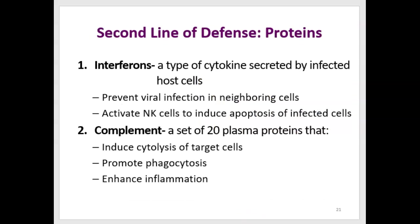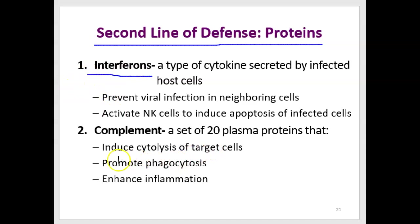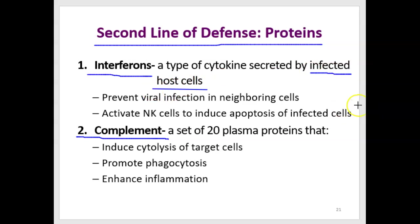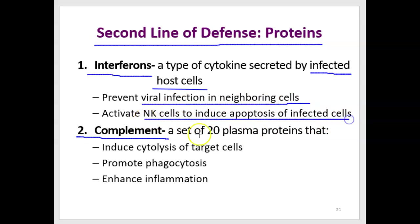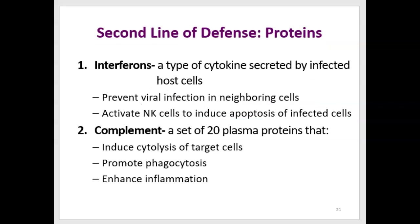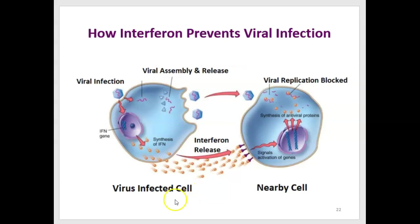We also have two sets of proteins in the second line of defense. One group is called interferons, and another is called complement. Interferons are cytokines secreted by body cells that have been infected. They prevent viral infection in neighboring cells and also activate natural killer cells so they can induce apoptosis in virally infected cells. Let's look at how interferon works.